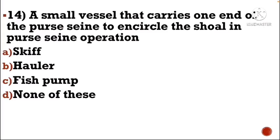Next question: A small vessel that carries one end of the purse seine to encircle the shoal in purse seine operation — Option A: skiff, Option B: hauler, Option C: fish pump, Option D: none of these. The correct answer is Option A, skiff.